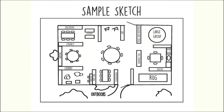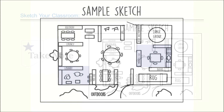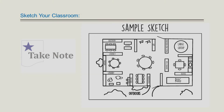Sketch the arrangement of your room including all areas you currently are using. Once you have a simple visual of your classroom, pick two of the areas that you feel need further supports. Keep these areas in mind and your overall arrangement as you work through the module and make notes for enhancements in your handout.